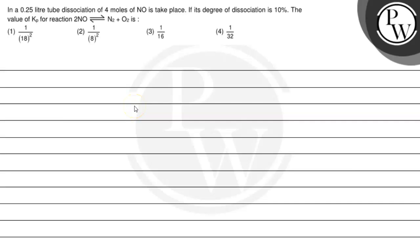Hello Bachchan, let's read the question. The question says that in a 0.25 liter tube dissociation of 4 moles of NO is take place. If its degree of dissociation is 10%, the value of Kb for the reaction 2NO gives N2 plus O2 is.